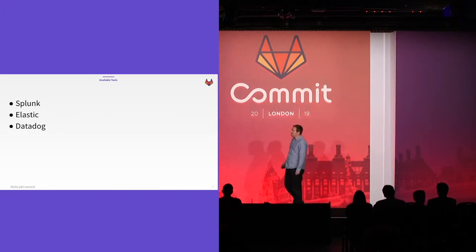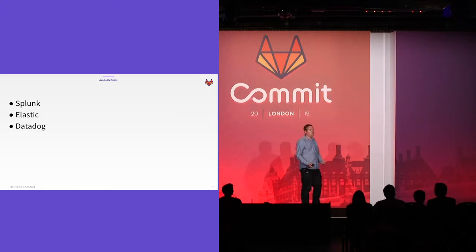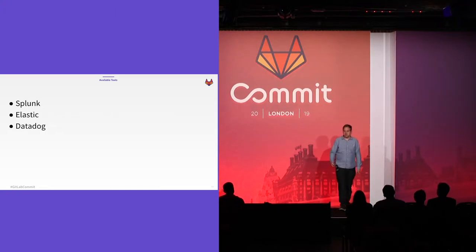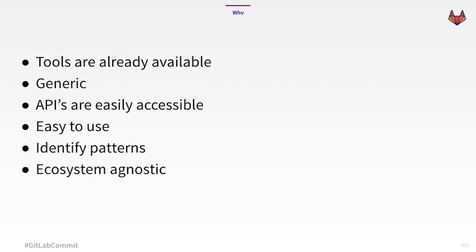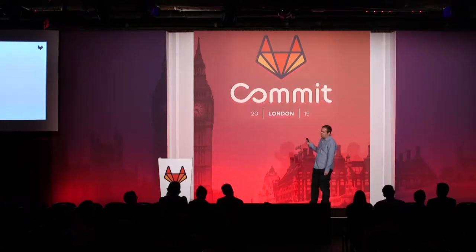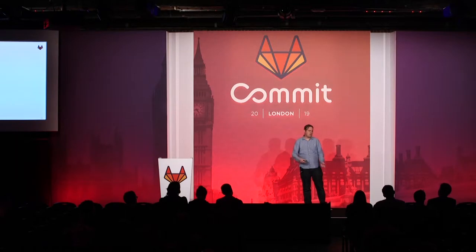One thing I want to talk to you about today is why you might want to use a data tool — where you would typically send your application logs — for DevOps purposes. Those tools are generally available and generic in terms of what data you can add. The APIs for DevOps tools like GitLab are some of the best I've used: really well documented, easy to access, and the response format is quite straightforward to pull in.